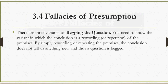The first type is begging the question. There are three variants of begging the question, but you only need to know the variant in which the conclusion is a rewording or a repetition of the premises. By simply rewording or repeating the premises, the conclusion doesn't really tell us anything new and thus a question is begged. The idea here is that the premises should point to a conclusion, and that the conclusion is something new and not just a repetition of the premises.